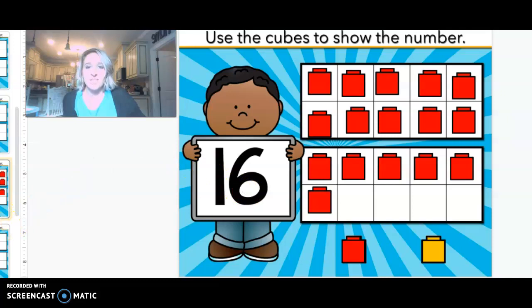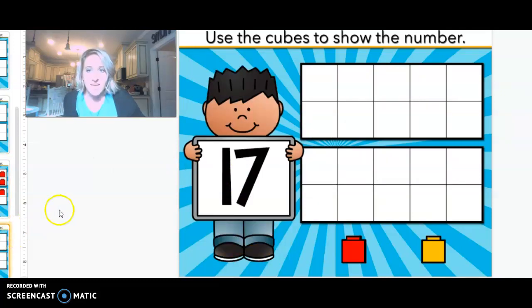Alright, let's go to the number 17. Let's look right here. 17 is a 1 and a 7. And let's count. Ready?